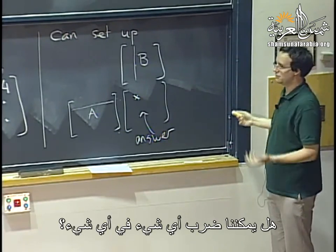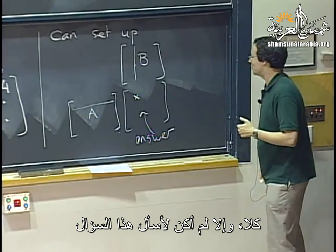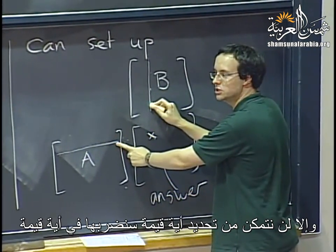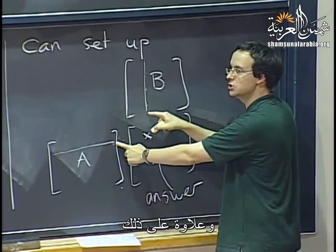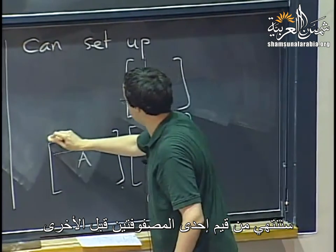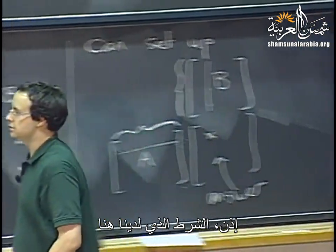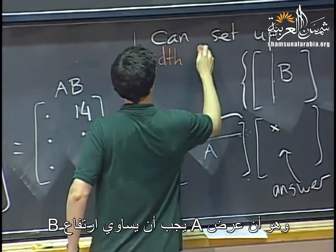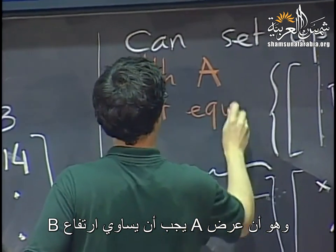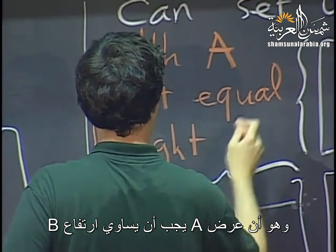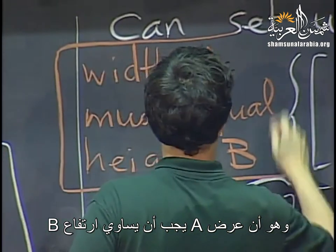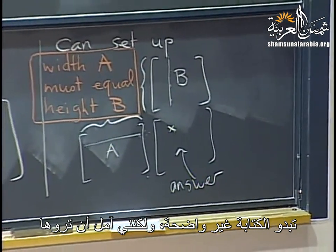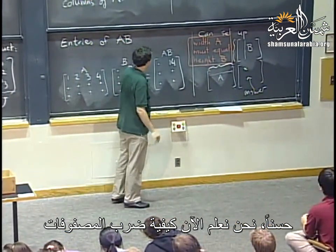There is a key condition: the width of A must equal the height of B. Otherwise we can't compute the dot products because we'd run out of entries on one side. This is the size compatibility condition for matrix multiplication.